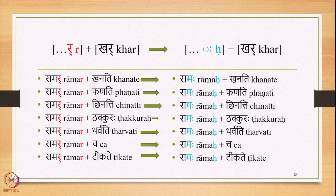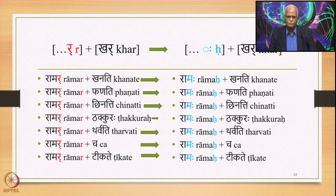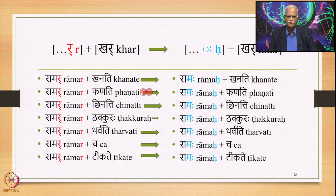Let us focus on examples where R plus Khar is the input. For instance, Ramar plus Khanati: R at the end of a Pada is followed by Kha which is a Khar, so 8.3.15 applies and R gets substituted by Visarga, generating the output Ramah Khanati. Similarly, Ramar plus Phanati and Ramar plus Thakarah also yield Ramah as output through the same process.